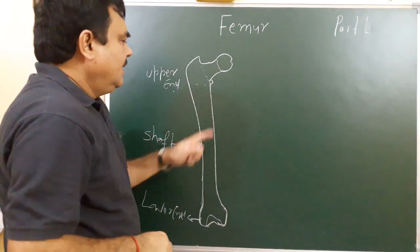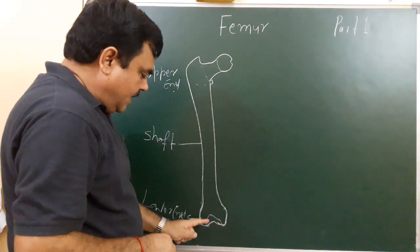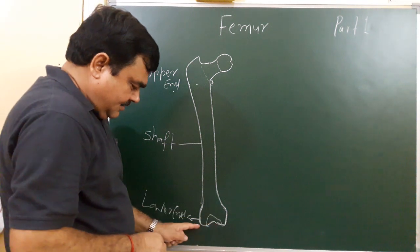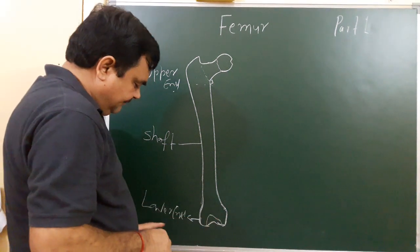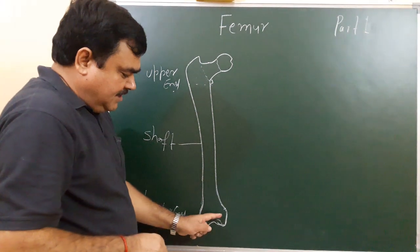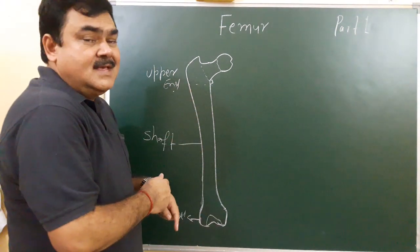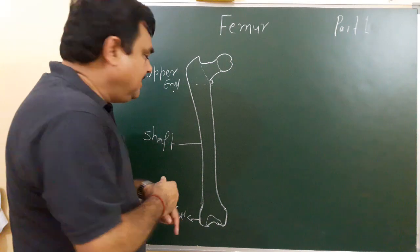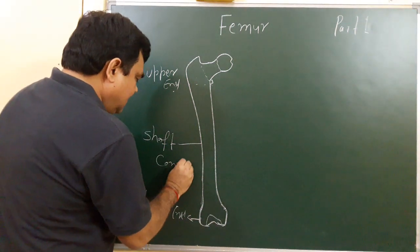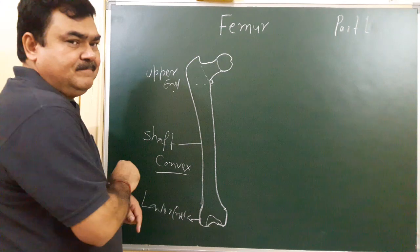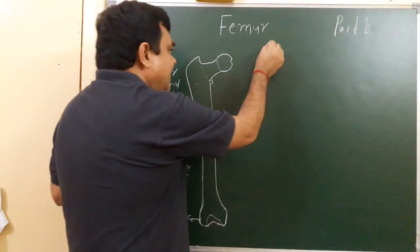The lower end is expanded and forms condyles — this is the lateral condyle and this is the medial condyle. The shaft is convex anteriorly. For side determination, three things to keep in mind.